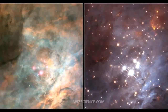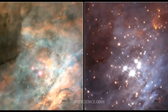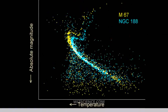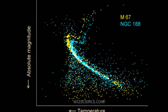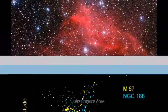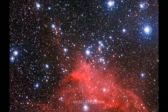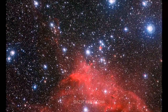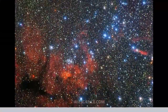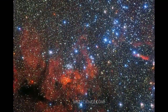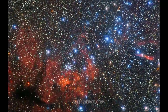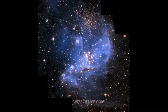Open clusters have been found only in spiral and irregular galaxies in which active star formation is occurring. Young open clusters may still be contained within the molecular cloud from which they formed, illuminating it to create an HII region. Over time, radiation pressure from the cluster will disperse the molecular cloud.